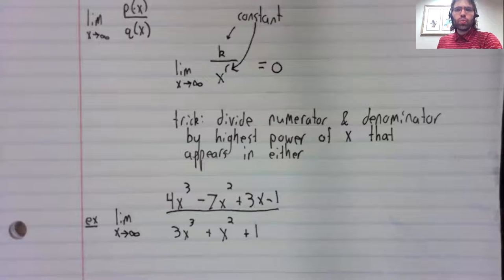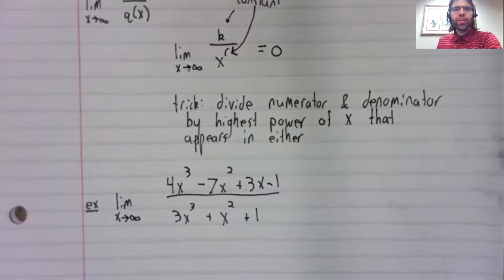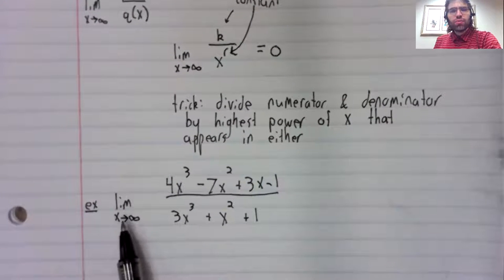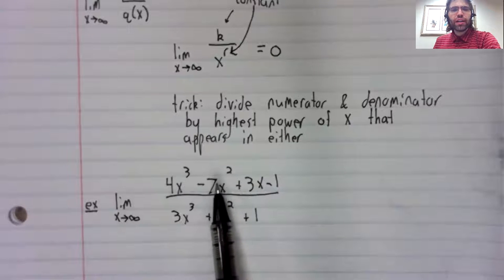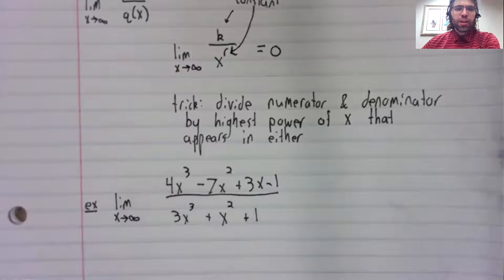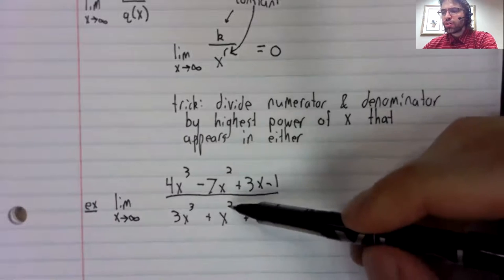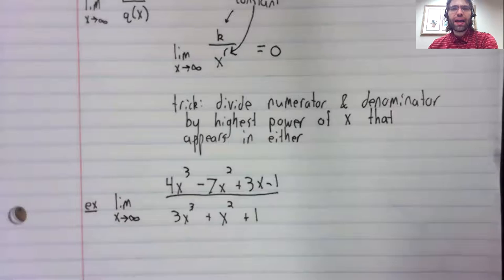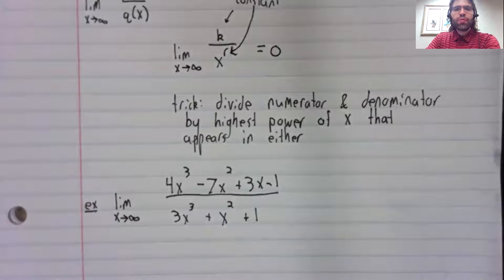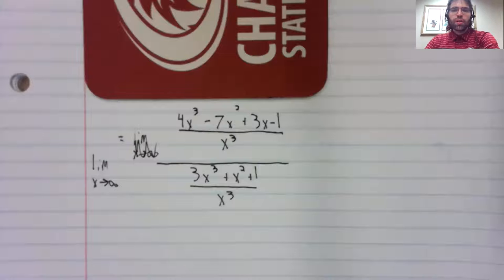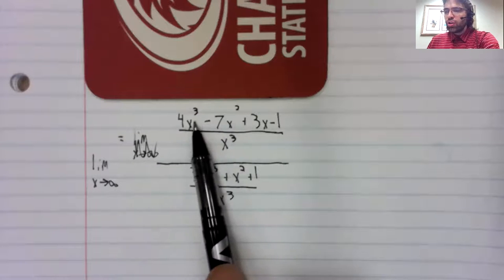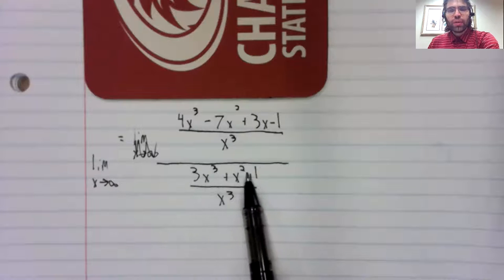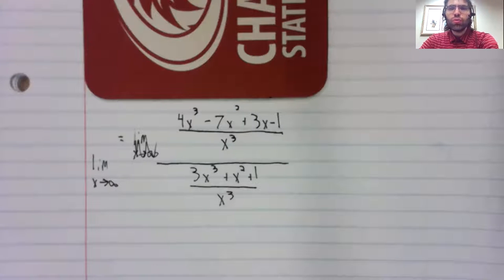An example might clarify things. We'll find the limit as x goes to infinity of this rational function. If we look at our powers of x, we've got first, second, third powers of x. So the biggest power of x that appears is x cubed. So we divide both the numerator and the denominator by x cubed.